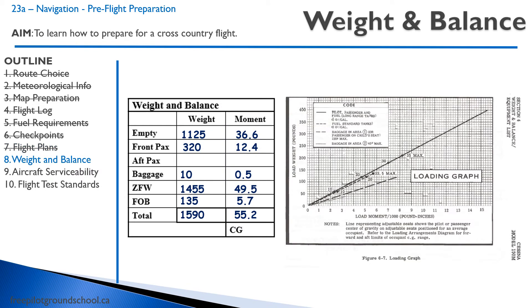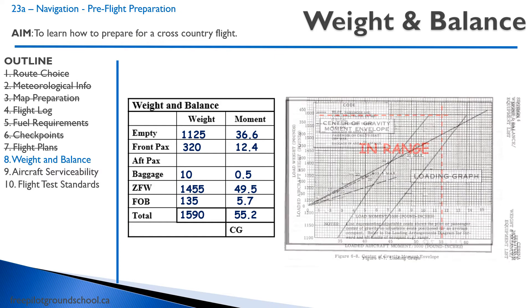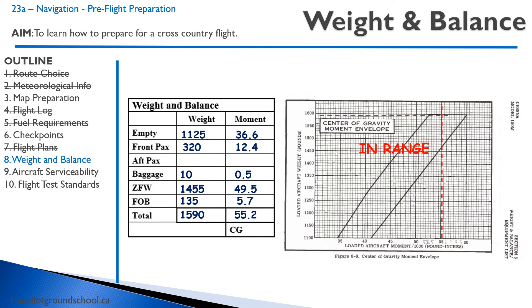Then we're going to do our weight and balance. To do the weight and balance, we're going to look at our empty weight and moment — get that from our weight and balance documents. Add up all the weights, look at the loading graph for the moment, and add that all up. Where they meet, you look at the moment envelope and confirm that we are in range.